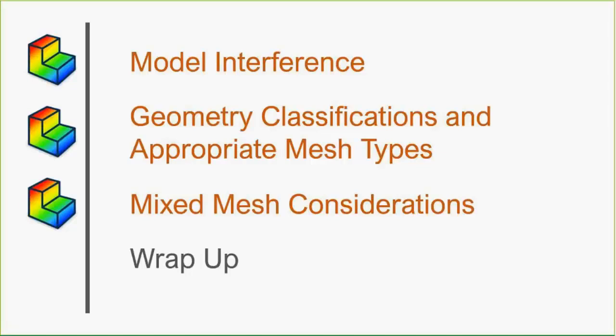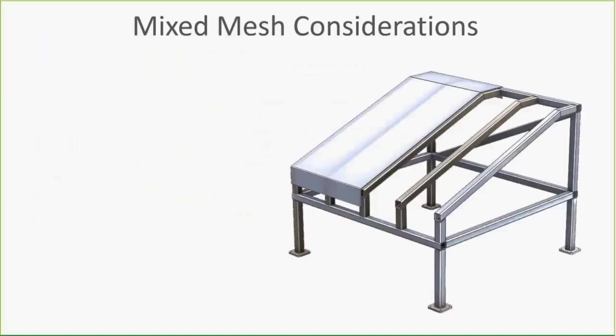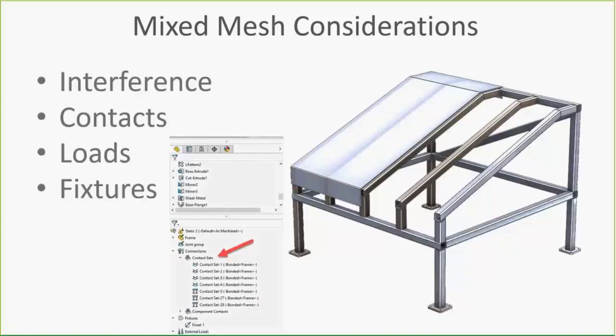In reality, we're not always dealing with just solid, just beam, or just shell — we're working with a mixed bag. Let's go through mixed mesh considerations. The example here is a weldment frame where the feet are solids, and there's a sheet metal cover on top. Interference still plays a role — even with a shell mesh, virtual thickness may cause interference. Weldments that are not properly trimmed can also cause interference issues. Other things to keep in mind with a mixed mesh are contacts, loads, and fixtures.